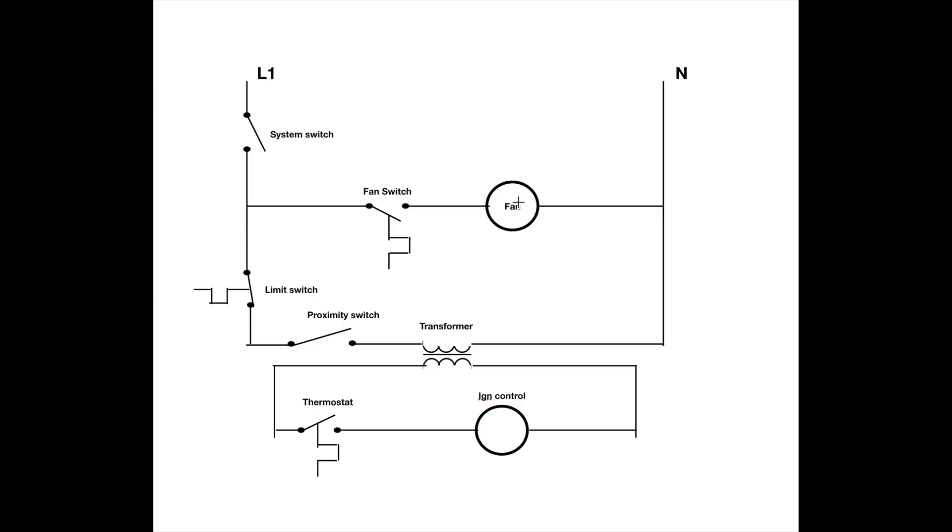So let's say I leave the area. After about five minutes, this proximity switch is going to open up. Now, all it does, it actually does the same thing as the limit switch does. It opens up the circuit to the transformer so that the ignition control shuts down and the burners go off. The fan continues to run because you want to clear the heat out of the heat exchanger. If I put this proximity switch, say, somewhere up here, then it would shut off the fan. So you put it downstream of the fan.